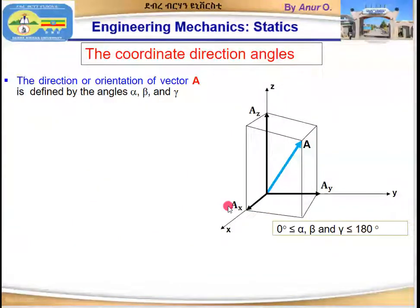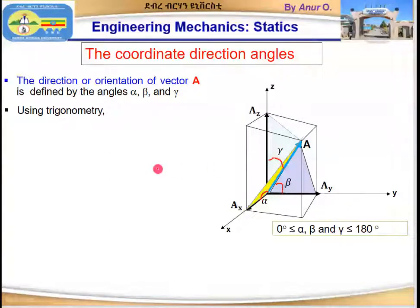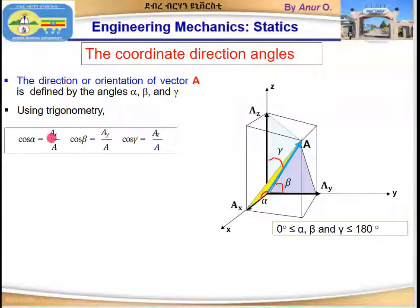The coordinate direction angles: the direction or orientation of vector a is defined by the angles alpha, beta, and gamma. Alpha is the angle between the x-axis and vector a. Beta is the angle between the y-axis and vector a. Gamma is the angle between the z-axis and vector a. Using trigonometry: cos alpha equals a-sub-x over a, cos beta equals a-sub-y over a, and cos gamma equals a-sub-z over a.